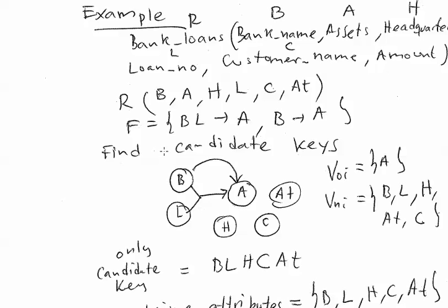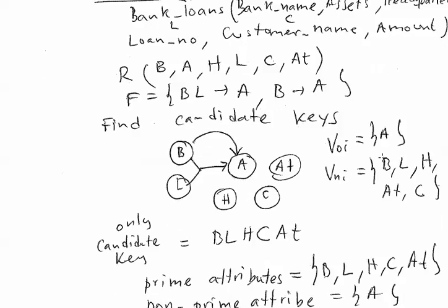Here is the dependency graph with the two functional dependencies. Attributes with only incoming edges cannot be part of the candidate key, while attributes with no incoming edges must be part of it. The no-incoming attributes in this case are H, AT, and C — nothing derives them. Together with B and L, these five elements B, L, H, C, T, A form the candidate key. In this example, this is the only candidate key.